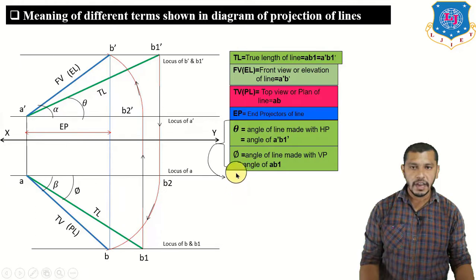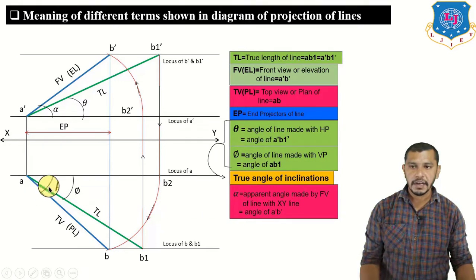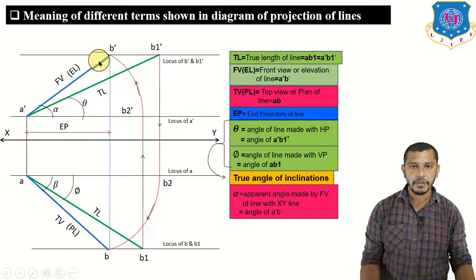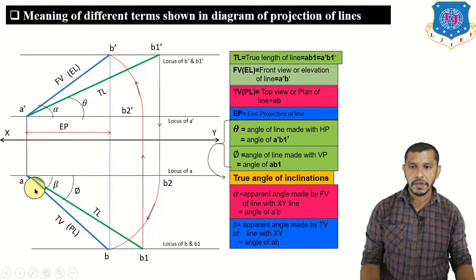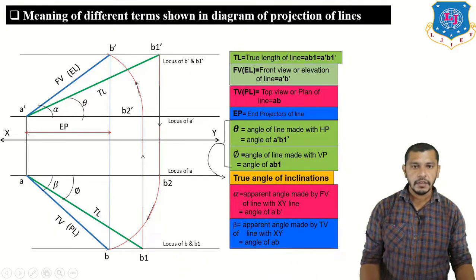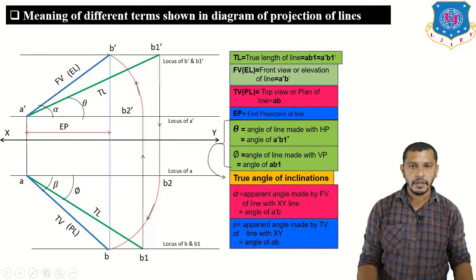Alpha is the apparent angle made by the front view of the line with the XY reference line — it is the angle of a-dash b-dash, which is the front view or elevation. Beta is the apparent angle made by the top view of the line with XY — beta is the angle of ab, which is the top view or plan. This is the standard diagram of projection of lines and these are the meanings of the different terms.